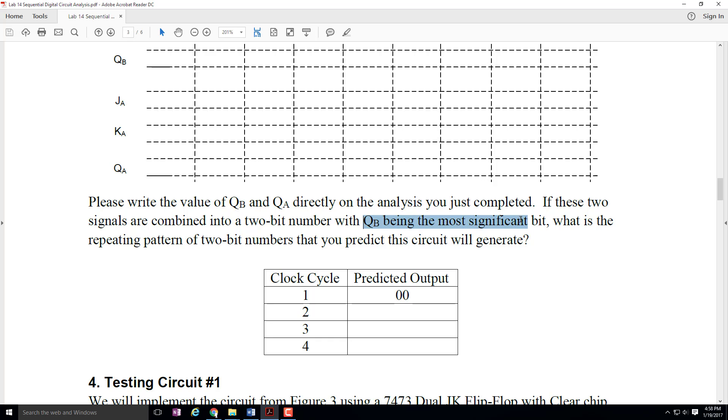Remember that Q sub B is the most significant bit. So this is the value of Q sub B, and this is the value of Q sub A. So if you're trying to figure out is it a 0, 1, or is it a 1, 0? Well, Q sub B is the first number, and Q sub A is the second number.